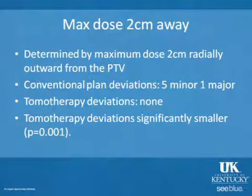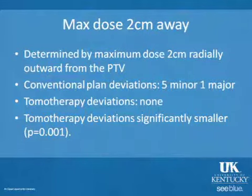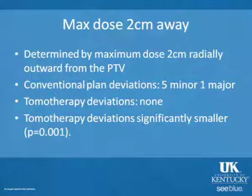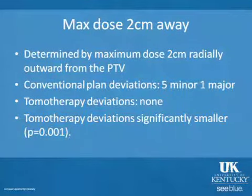The max dose at 2 cm — defined as the maximum dose 2 cm radially outward from the PTV — showed the conventional plans with 5 minor and 1 major deviation, while tomotherapy had no deviations. Because tomotherapy uses far more beams, the weighting of each individual beam can be reduced much more, resulting in significantly smaller deviations.